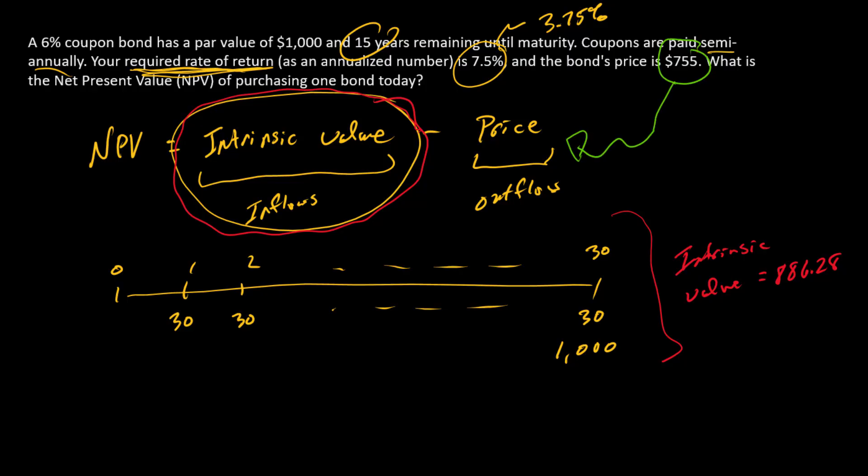So we've got $886.28 minus $755. The NPV here is going to be $111.28, and so you can think of purchasing this bond at that price to be increasing your own wealth by $111.28.